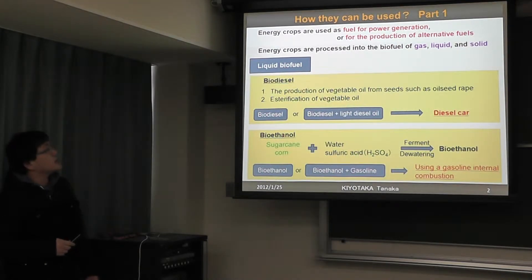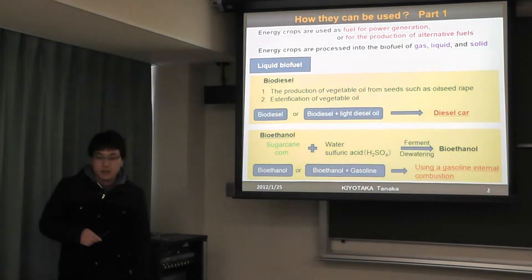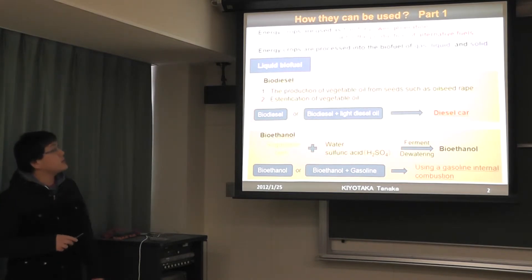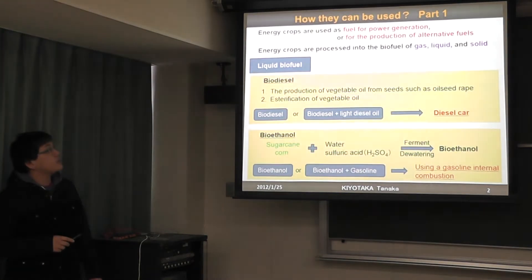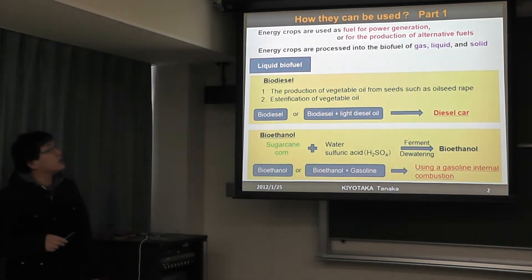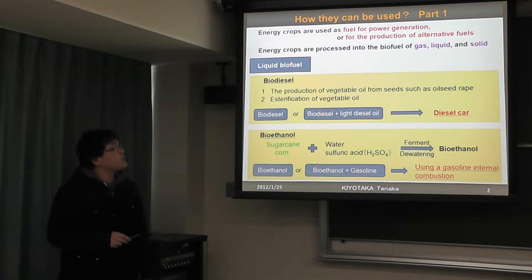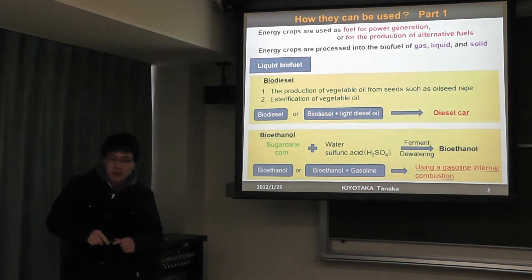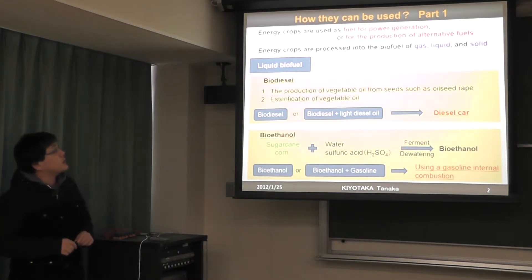Next, I will explain how energy crops can be used. Energy crops are used as fuel for power generation or for the production of alternative fuels. Energy crops are processed into bio-fuel in the forms of gas, liquid, and solid.